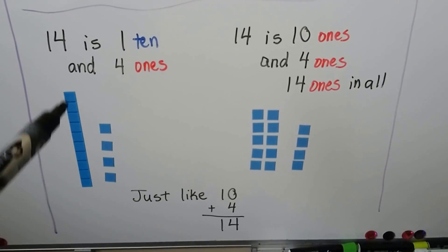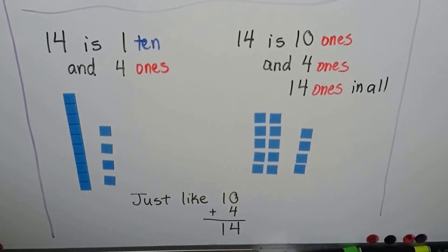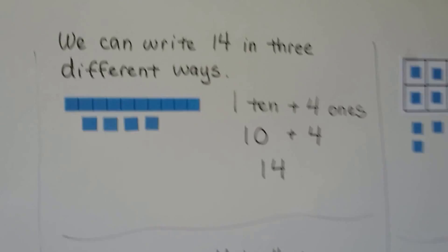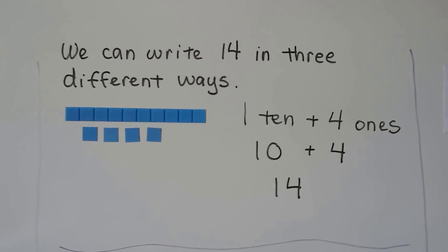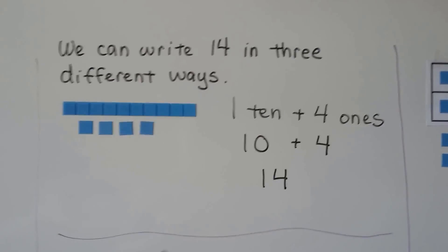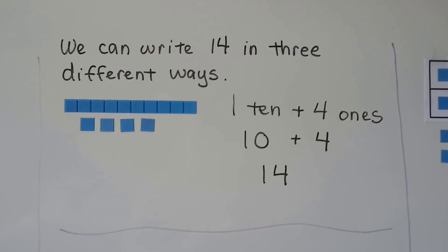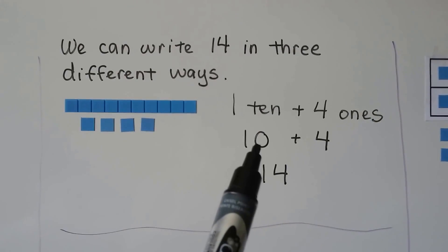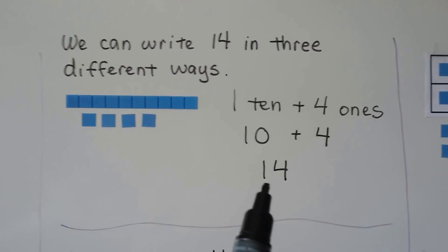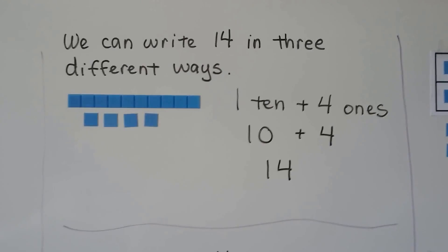We can write 14 in three different ways. Here we have a 10 and four ones. We can say it's one 10 and four ones. We could say it's 10 plus 4. We could say it's 14 — we have a 1 in the tens place and a 4 in the ones place.